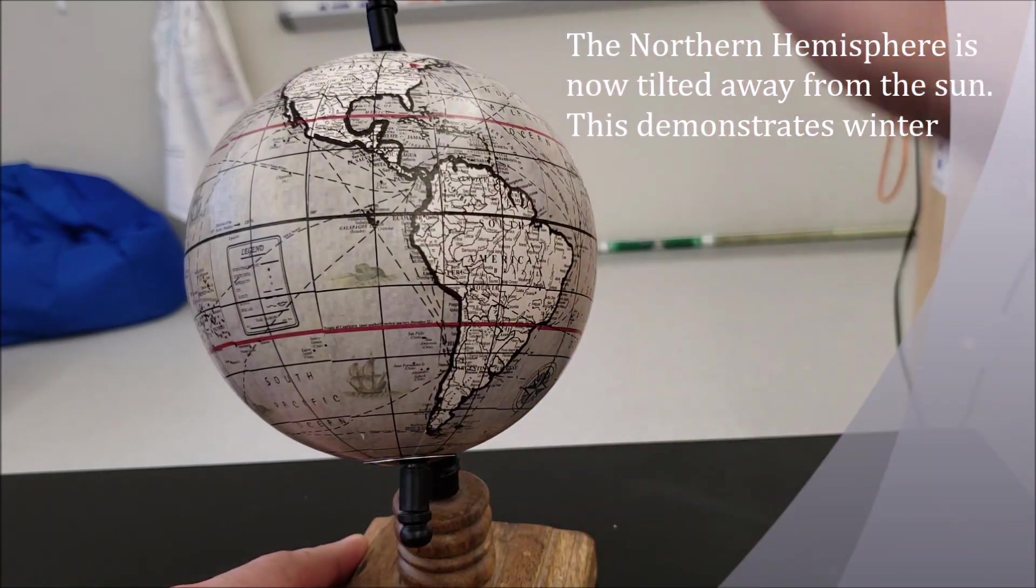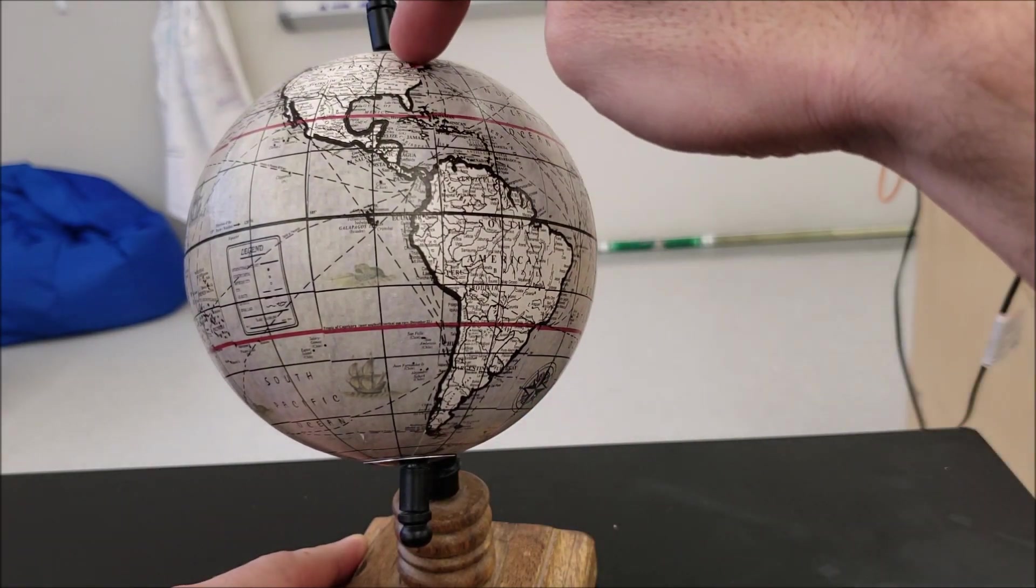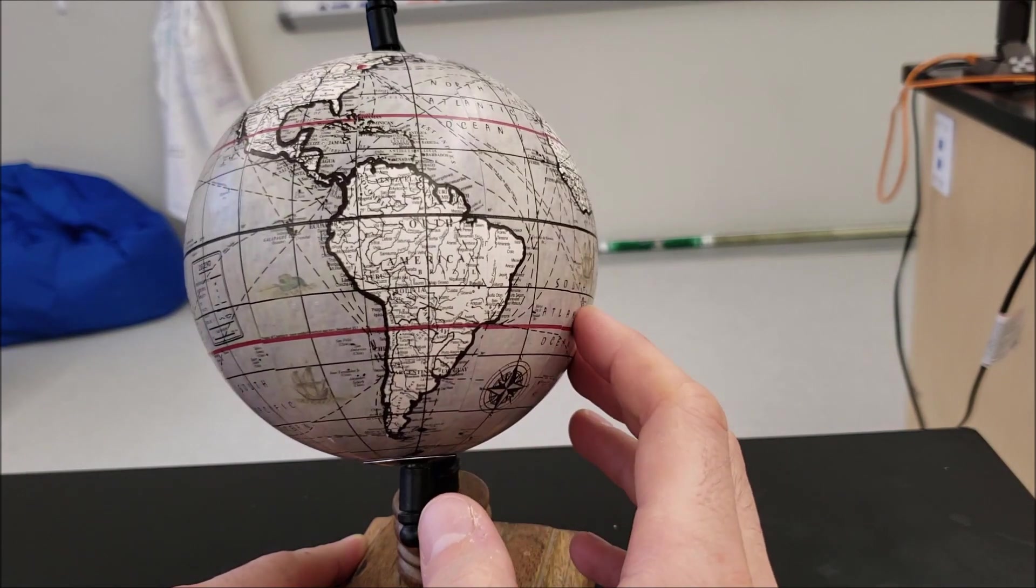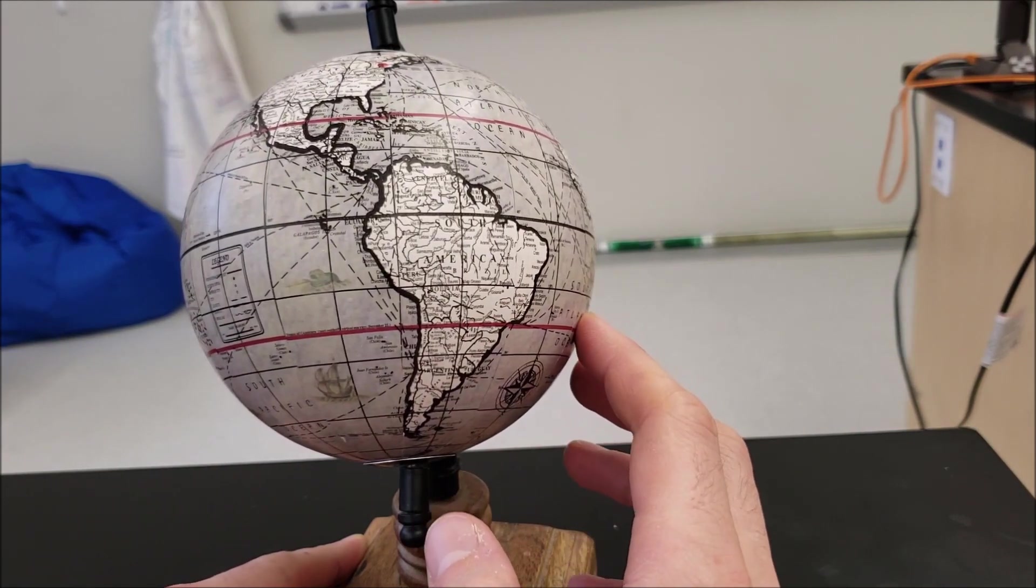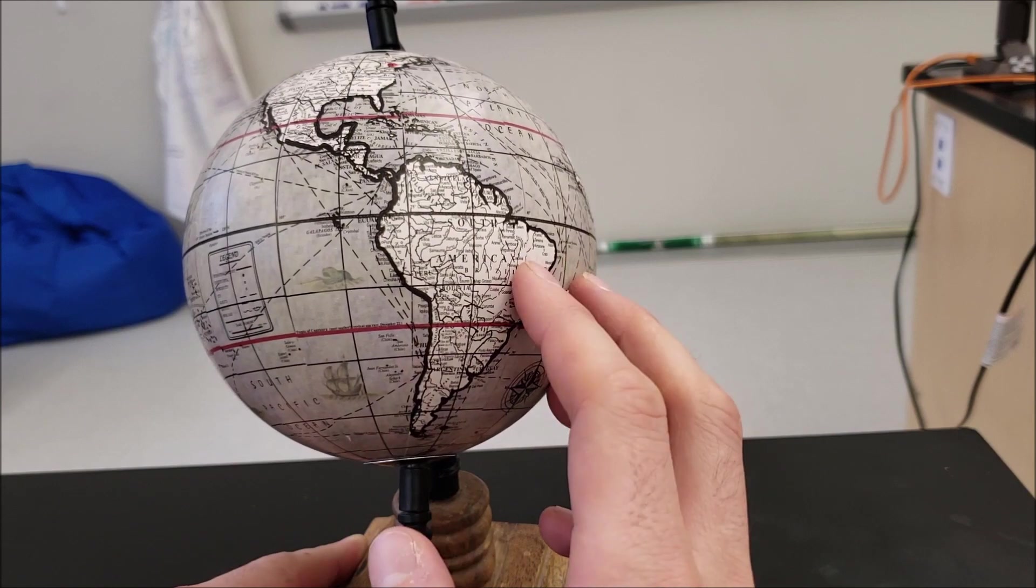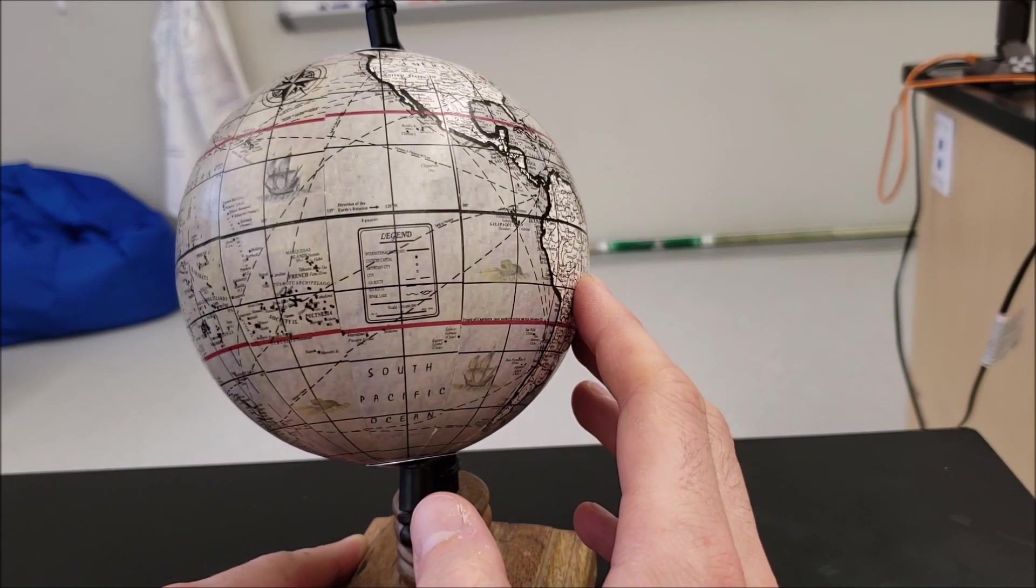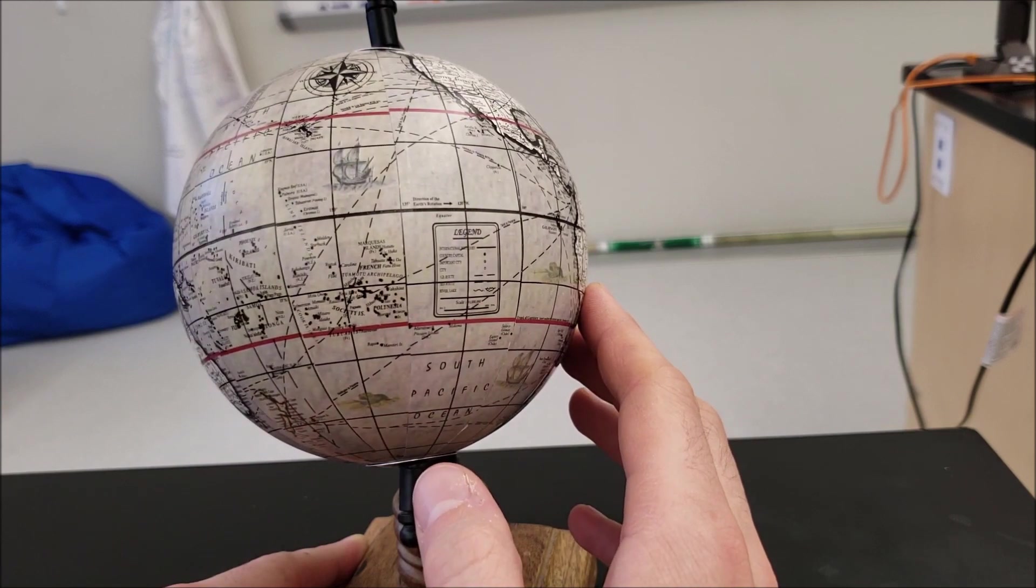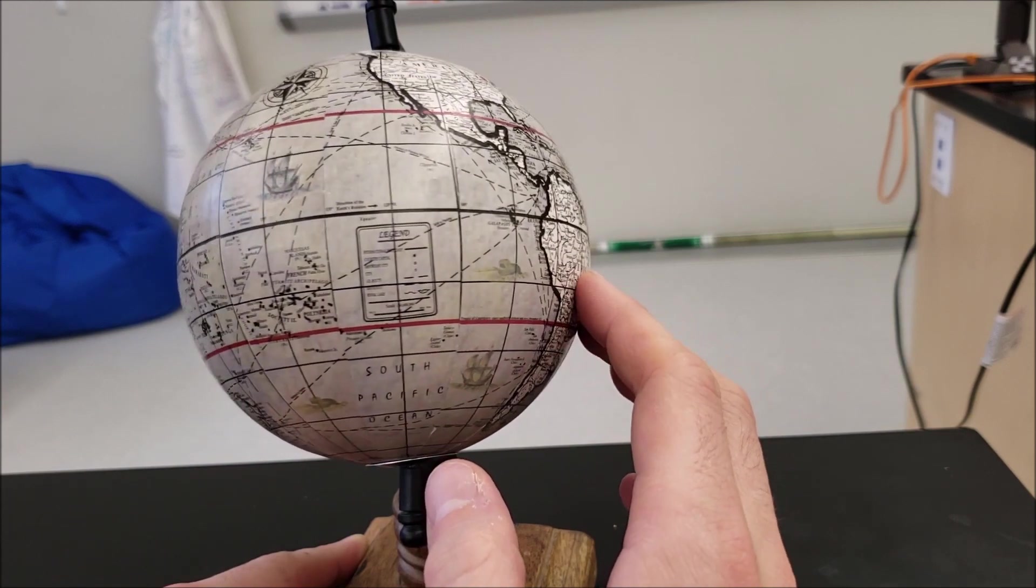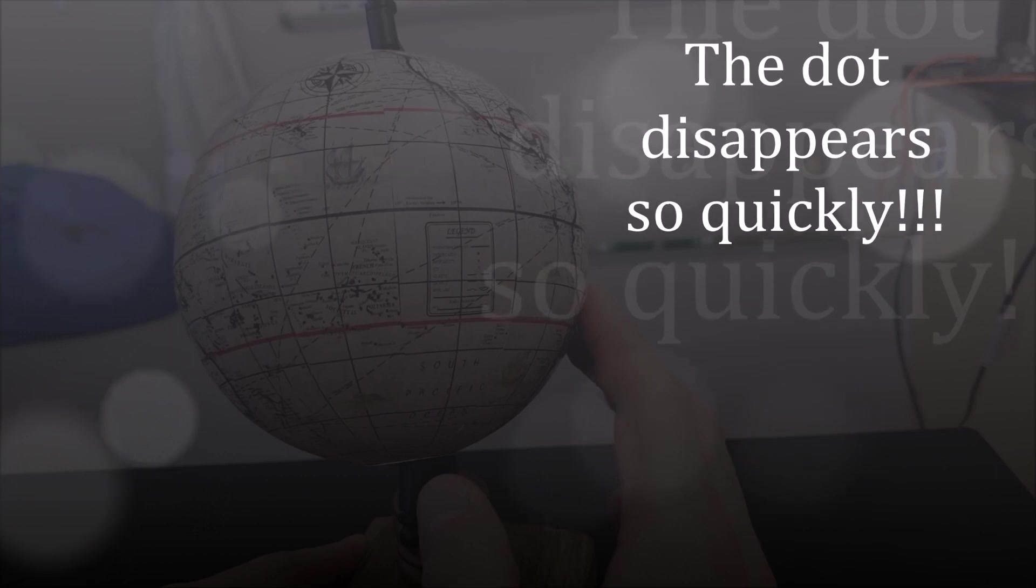And right away, we can see that this dot is going to disappear a lot quicker. So there's our red dot up at the top. And we're going to do the same thing. But I'm going to have to use the axis pole at the top to count. So we're going to count. Ready? One, two, three. That wasn't looking good. Four. Four hours.